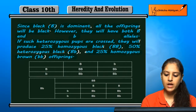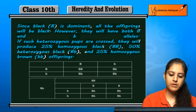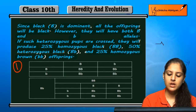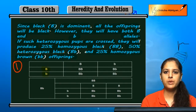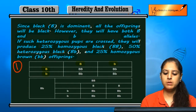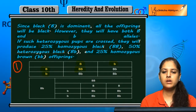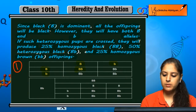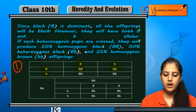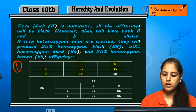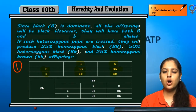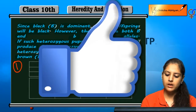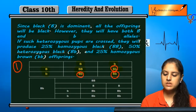Let us see how this works. In the first case, one parent is black and the other is brown. If we make the Punnett square table: black × black gives a black dominant offspring; black × brown and brown × black give heterozygous black; and brown × brown gives brown. So the dominant character BB appears three times out of four.